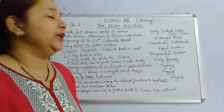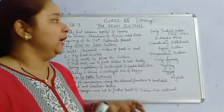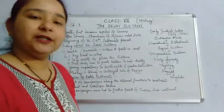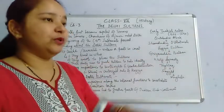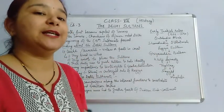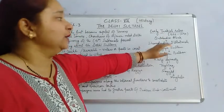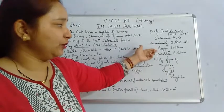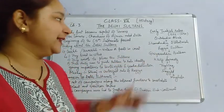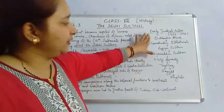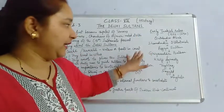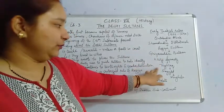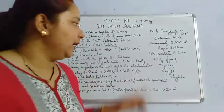Qutbuddin Aibak, after winning regions of India, left his governor Iltutmish here to look after the conquered territory. Iltutmish was the person taking care of the winning territories in India, and he established his rule here. After his death, his daughter Razia Sultan became the ruler, and then Gyasuddin Balban. After the Slave Dynasty, the Khilji Dynasty came, then the Tughlaqs, then the Sayyads, and later the Mughals.